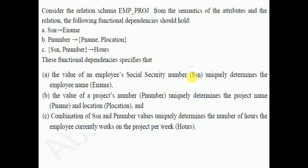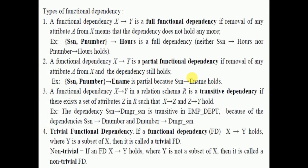For example: SSN is a prime attribute that implies employee name; P-number (project number) gives project name and project location; and SSN and P-number together as a super key gives HARS. Every single attribute in a relation is functionally dependent on the prime attribute.